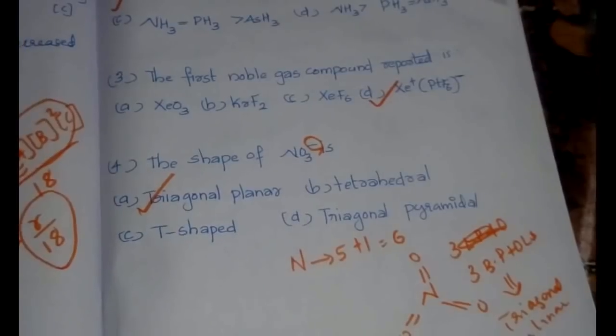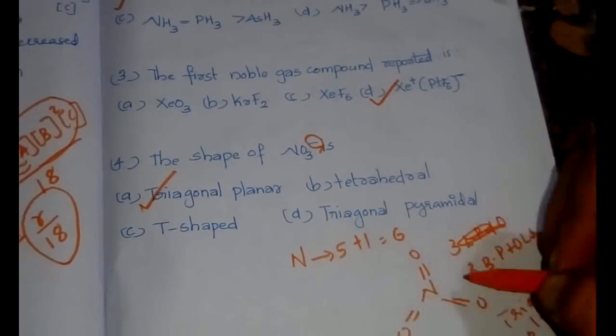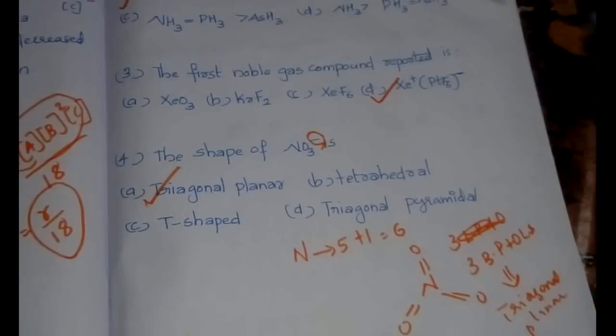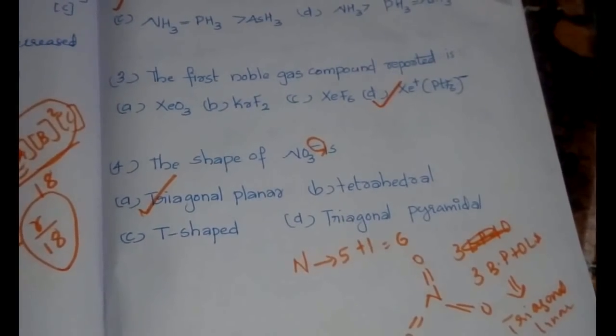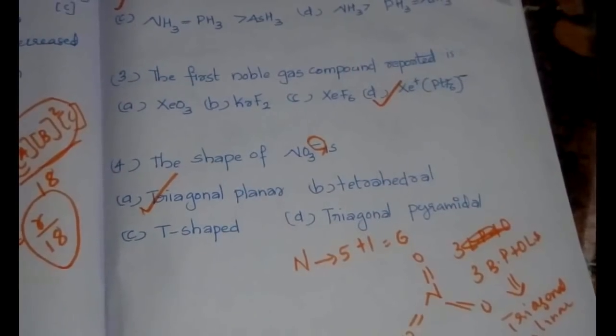Therefore we are having three bond pairs plus zero lone pairs, which corresponds to trigonal planar. So our answer would be option A, trigonal planar. Please watch that video because this type of question will be coming for sure.